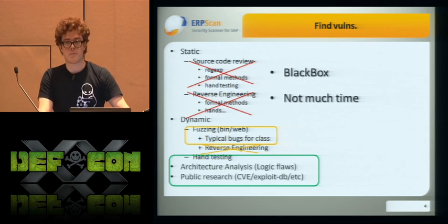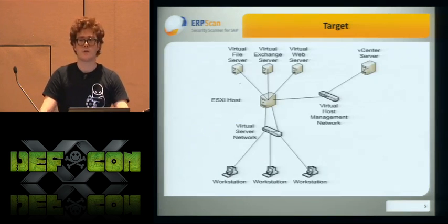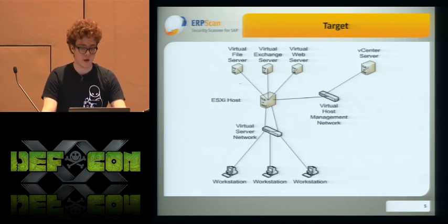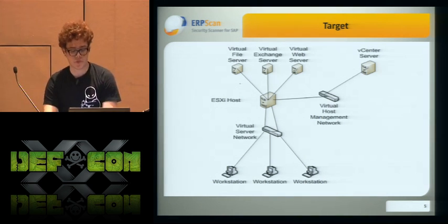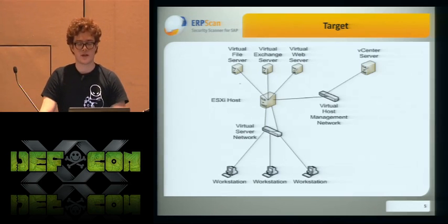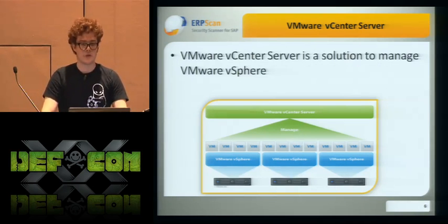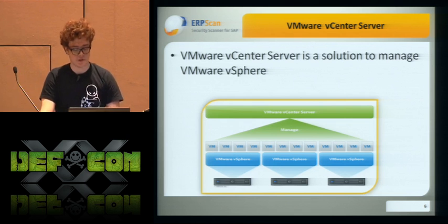I want to show that using public research — like old bugs, old research, old information, and a little bit of analysis — we can find new bugs. One day we had a big network where all infrastructure was built on VMware: ESXi hosts and vSphere. Everything seemed pretty secure — all patched with the latest updates, no default passwords or anything stupid. So we decided to try to attack the vCenter server, because vCenter is the solution to manage vSphere. If we can hack vCenter, we can hack all VMs and all infrastructure.